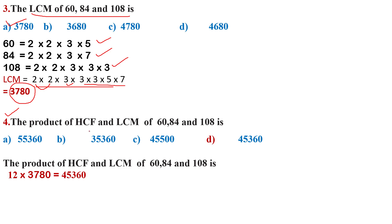Now take the fourth question: the product of HCF and LCM. From earlier parts, we found HCF is 12 and LCM is 3780. The product of these two numbers, 12 and 3780, is 45360. Option D is correct.